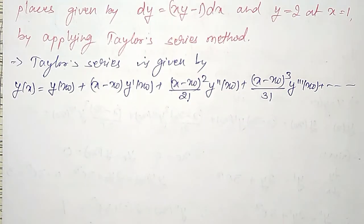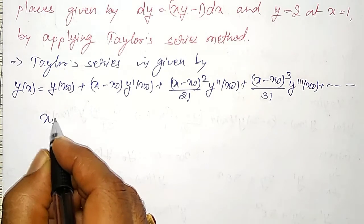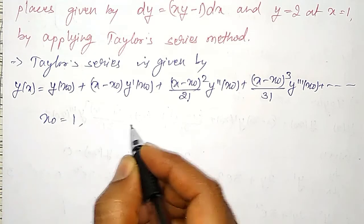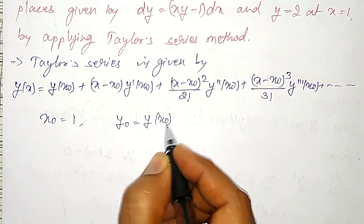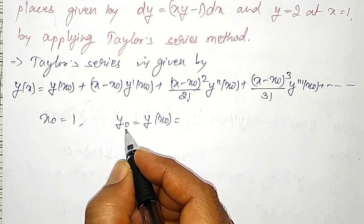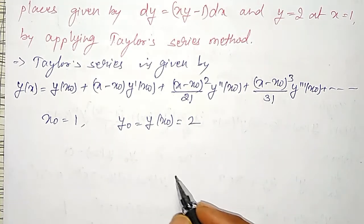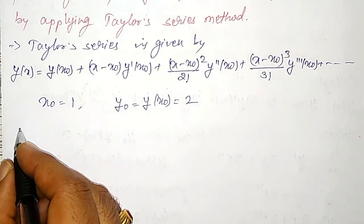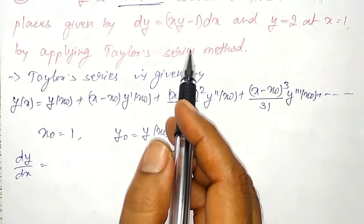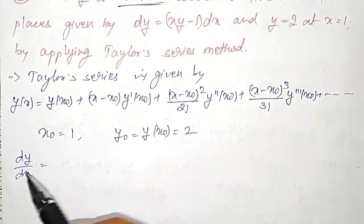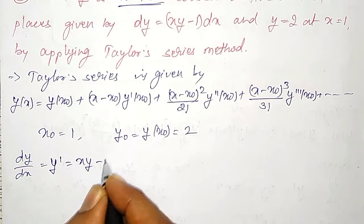What is given? x₀ = 1, and y₀ = y(x₀), meaning the y value at x₀, that is equal to 2, they are given. And dy/dx I can rewrite as y' = xy − 1.